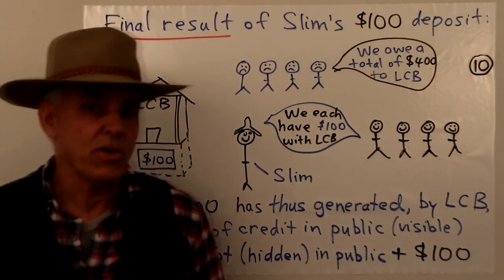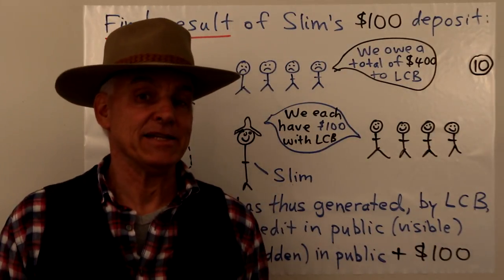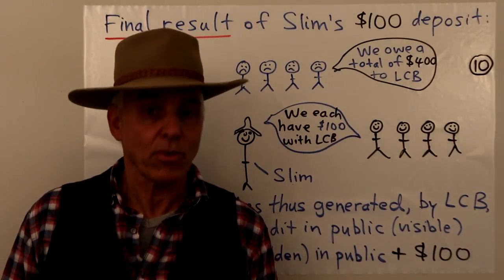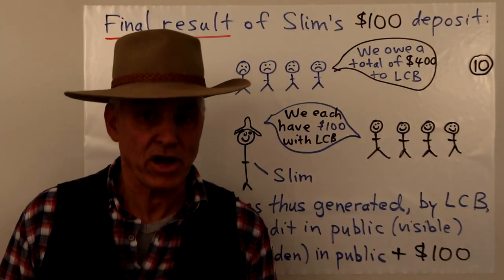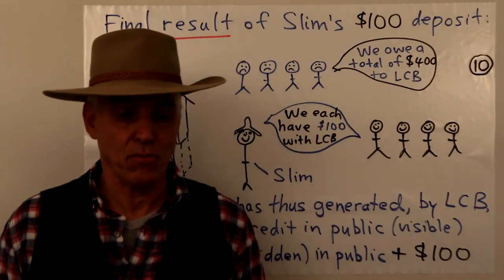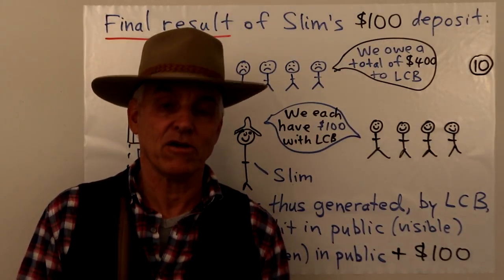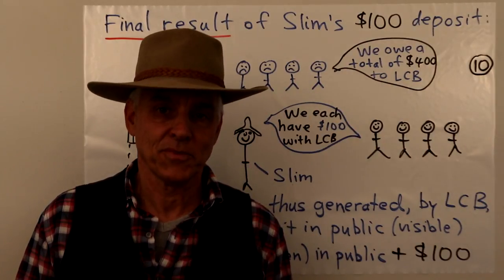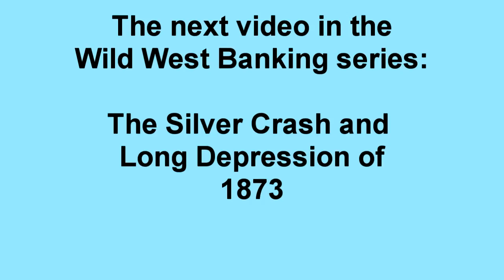In our next video, we'll talk about what happened in 1873 — a major calamity struck widely around the world, a long depression ensued, there was a major silver collapse, and that affected the Smith brothers importantly and changed the direction of my bank completely 180 degrees. I'll tell you all about that in my next video. I'm Norman Wahlberger — thanks for listening. We'll see you next time.